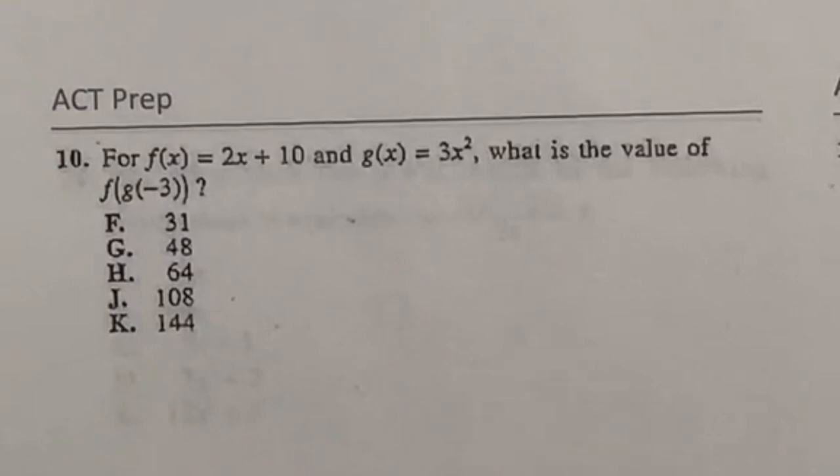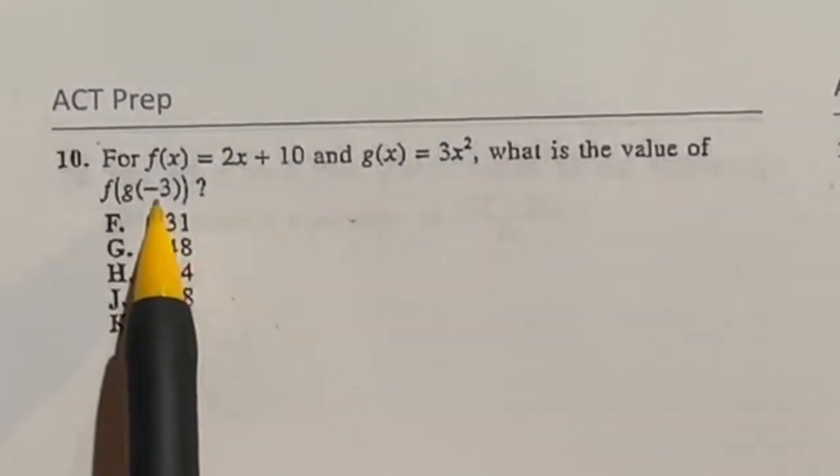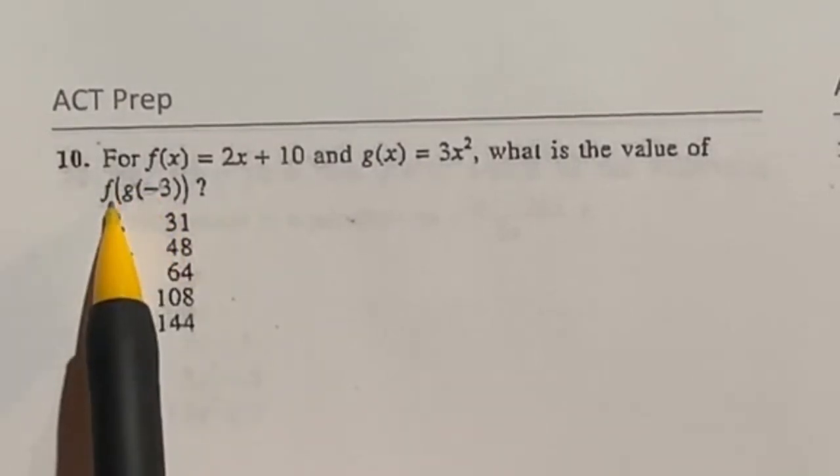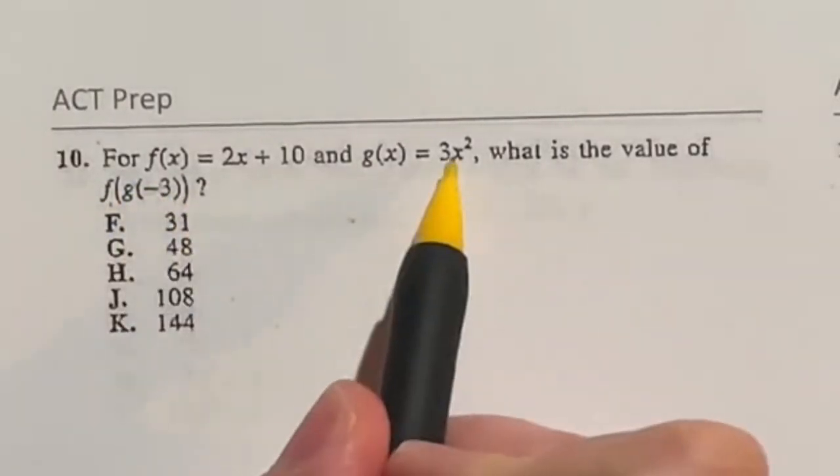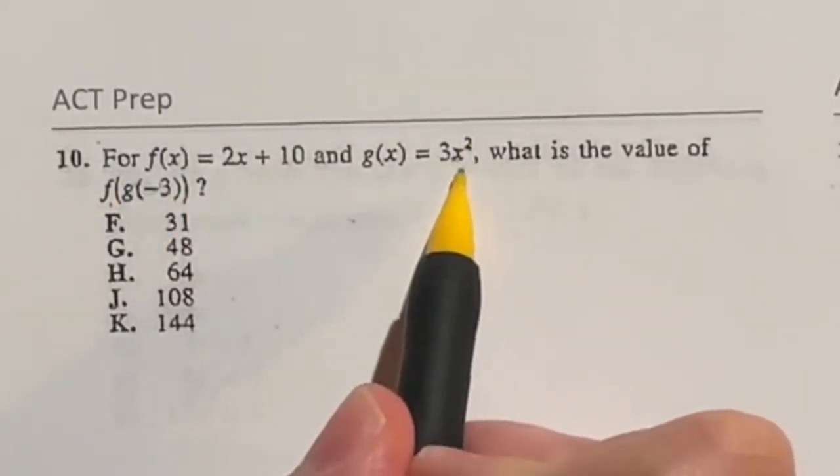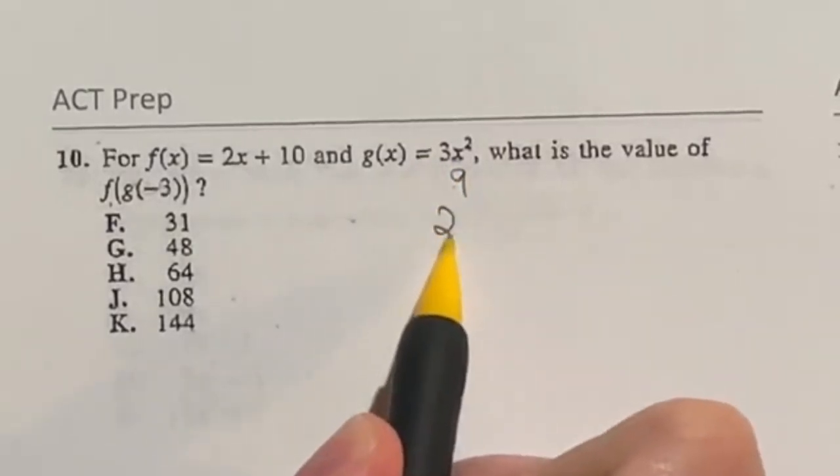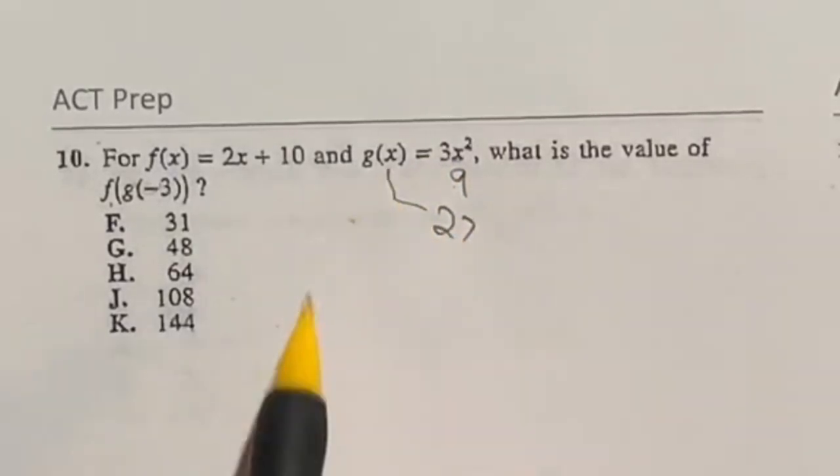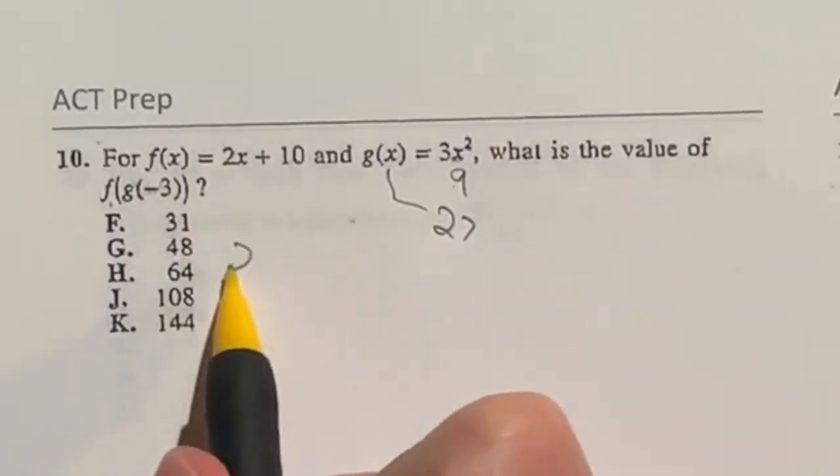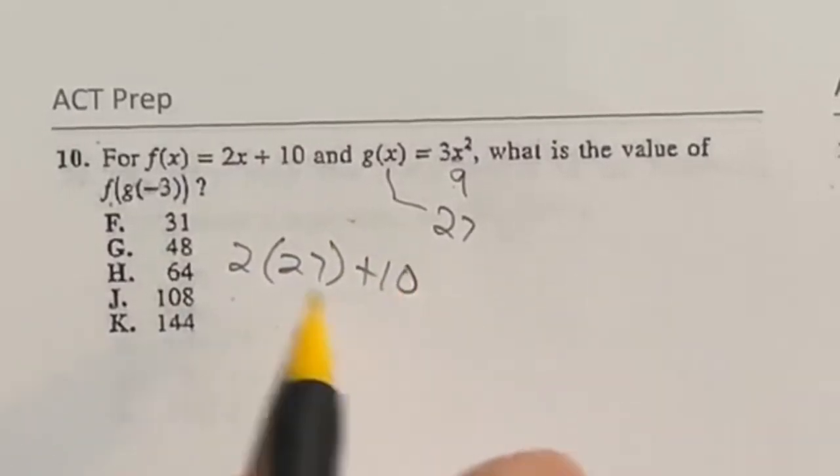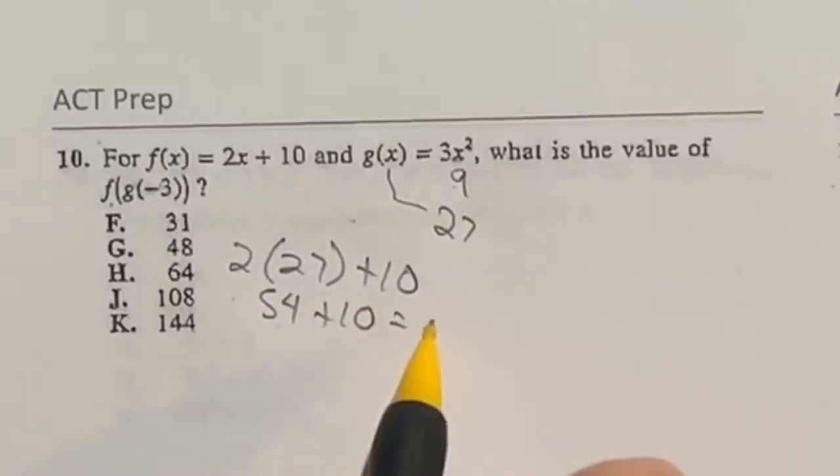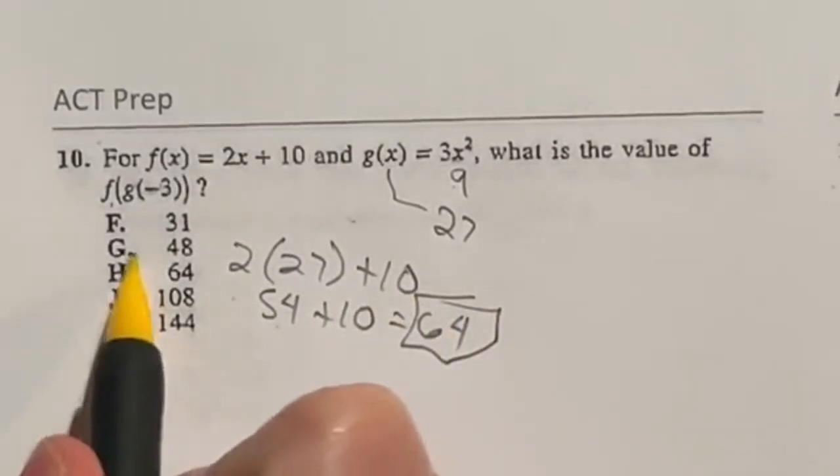So function notation sometimes looks a little tricky but really isn't too bad. It says here we have negative 3 inside of the g function and that answer is going to be inside of the f function. So let's go ahead and do that. Negative 3 I'm going to plug it in right here. First thing we need to do is this exponent. So negative 3 squared is going to give me a positive 9. 9 times that 3 is going to give me 27. We now have our answer to the g function. We're going to then take that and plug it into the f for x. So we're going to be doing 2 times that 27 plus 10. Well 2 times 27 is just going to give me 54 and if I add 10 to that that's going to give me 64. So our final answer here is H.